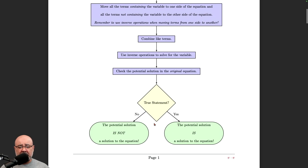And I mentioned this in the previous video, but we must, must, must check the potential solutions in the original equation, whatever linear equation you were given at the beginning. That's the one where you plug in these potential solutions, and you're looking to see if you get a true statement. So if you get a true statement, then the potential solution is indeed a solution to the equation. And if you don't get a true statement, then the potential solution is not a solution to the equation. And that's the end of the problem.